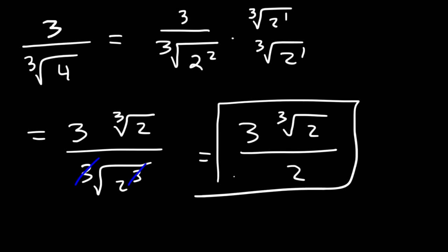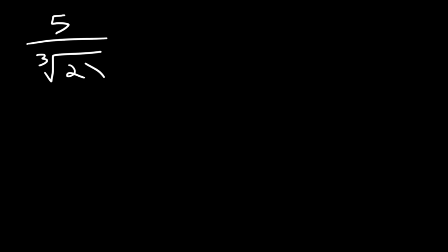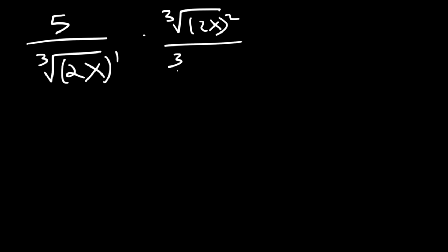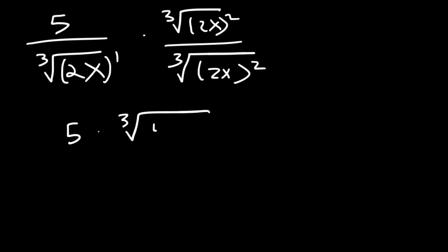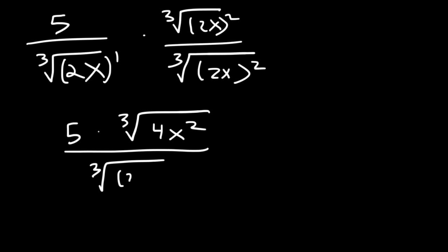Try this one. For this problem we have 2x to the first power, so we're going to multiply the top and the bottom by the cube root of 2x to the second power so we can have three 2x variables on the bottom. On top this gives 5 times the cube root of 4x squared. On the bottom, the cube root of 2x to the third power is just 2x. There's nothing we can do to simplify further, so this is the answer.